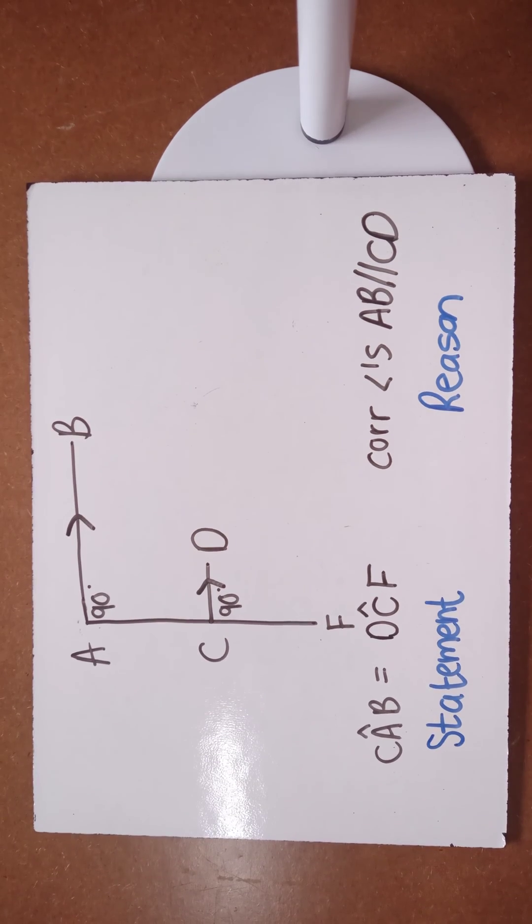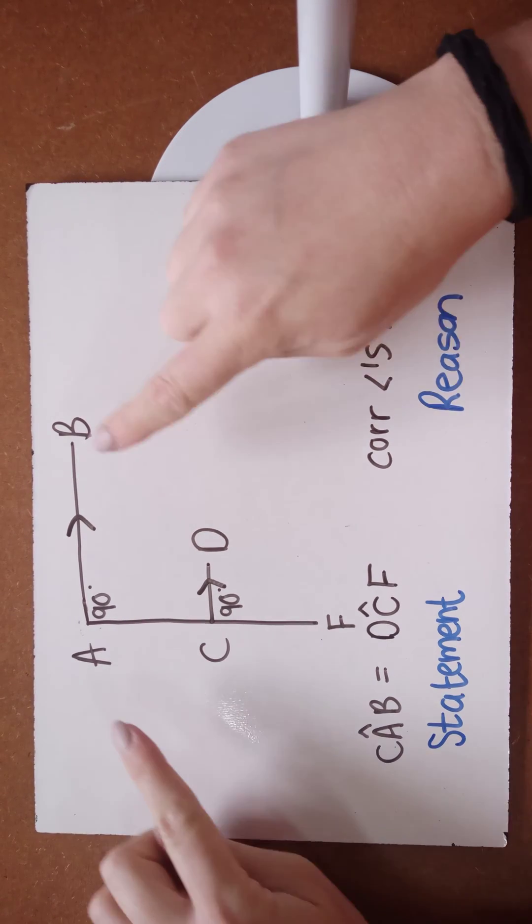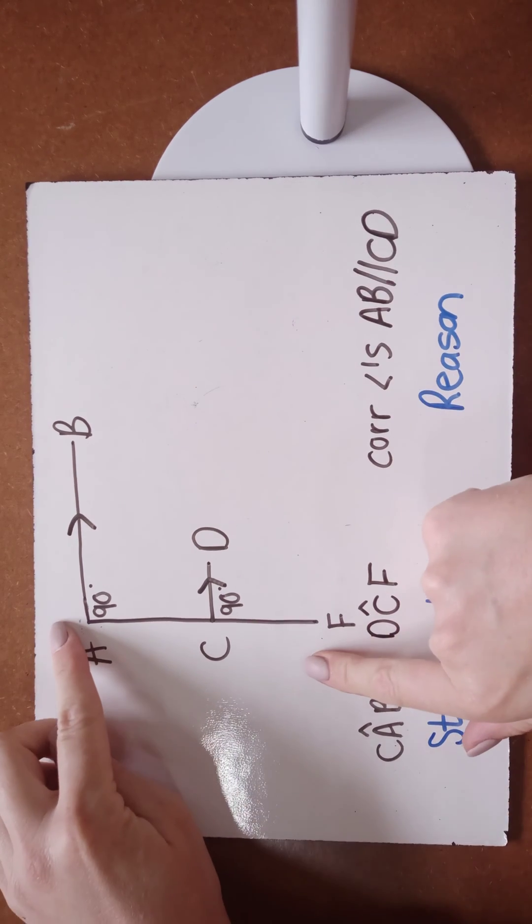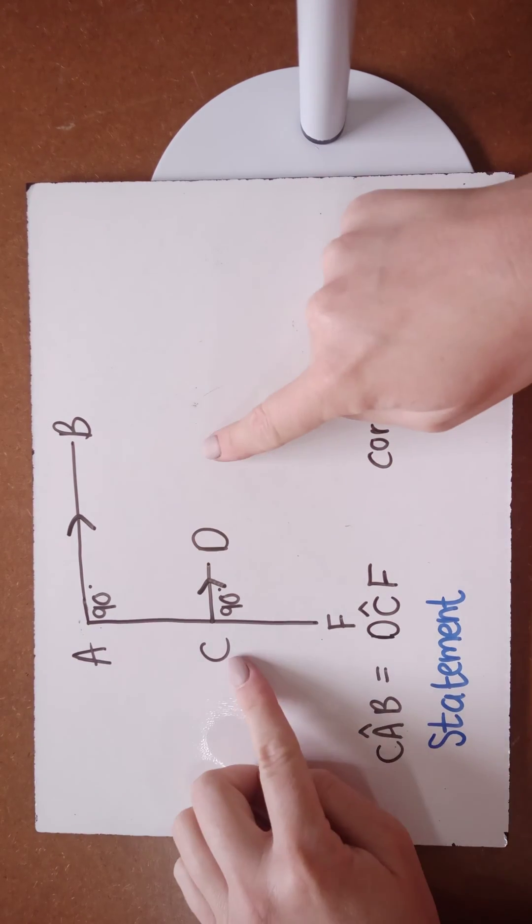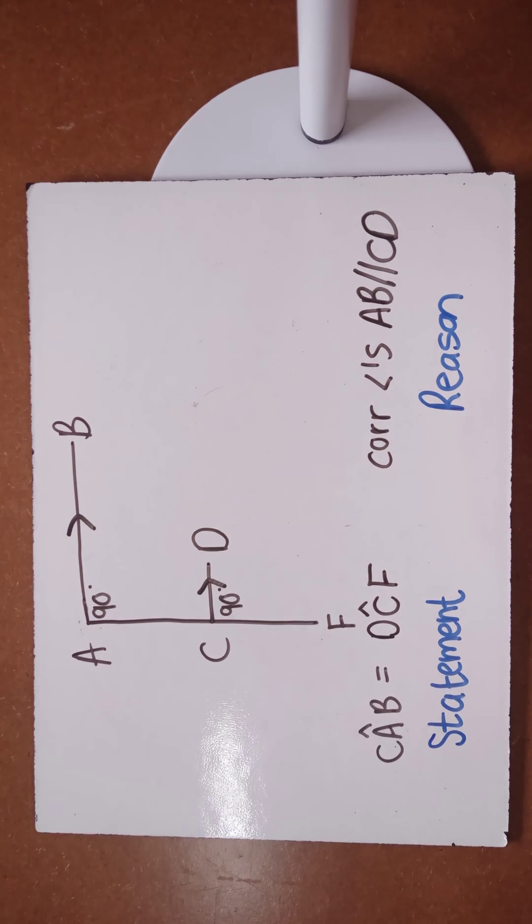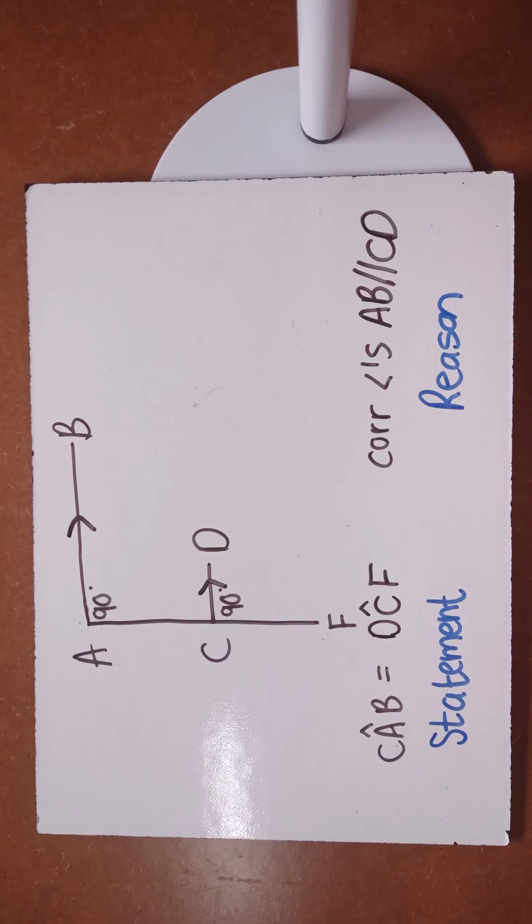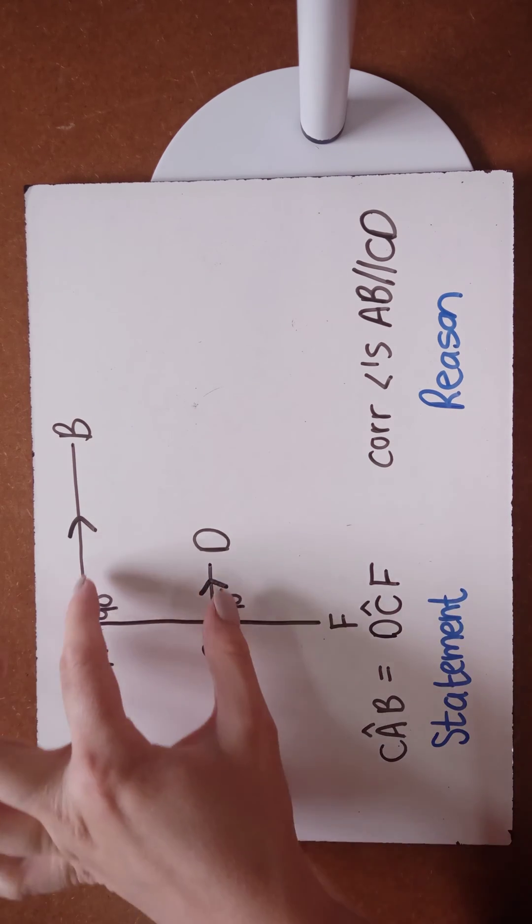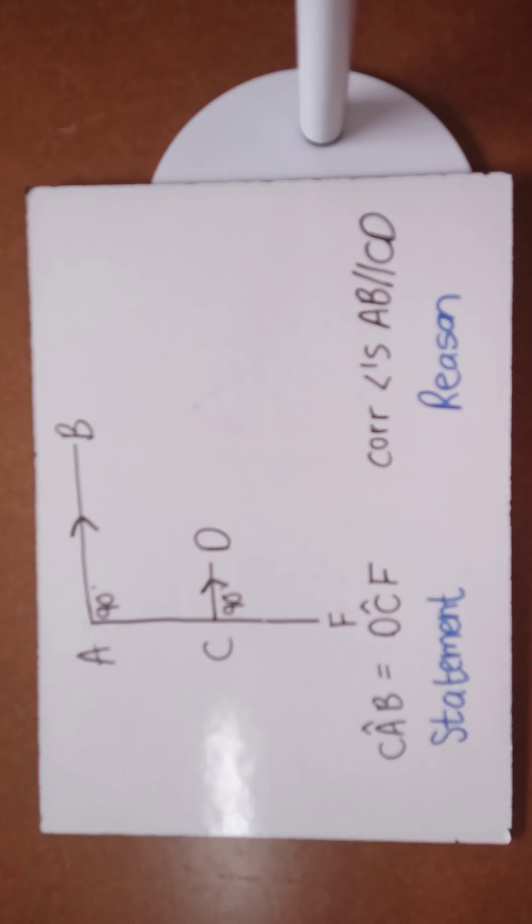Let's look individually at each F angle. If I have line AB that is parallel to line CD and line AF touches the parallel lines, I have an F shape drawn here.